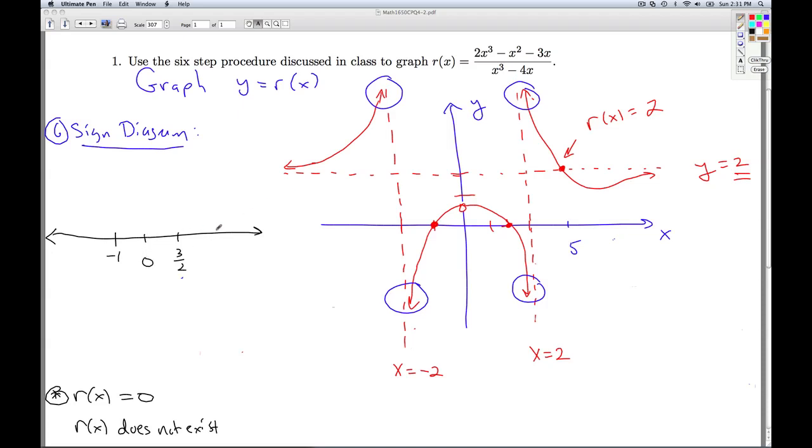Where r of x does not exist, those were the places in the domain where r of x was undefined, and so that was at zero plus two and minus two. So I'll put a zero there, a two there, and a negative two there. And at these last three points, the function's undefined, so I'm going to put a question mark there. And then at these other two points, I'm going to put a zero there because that's where the function was zero.